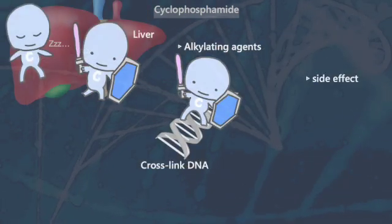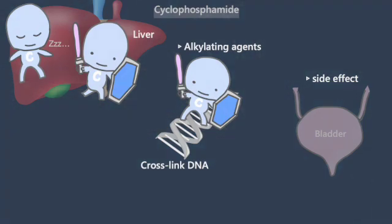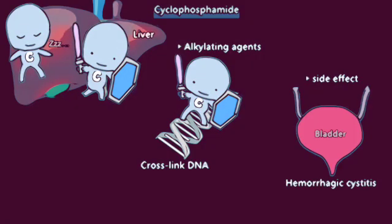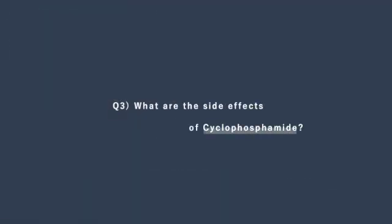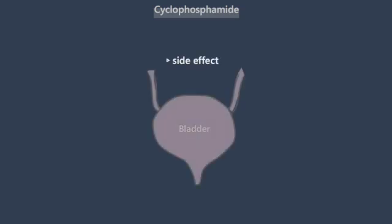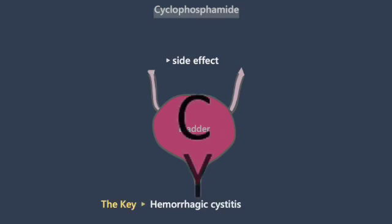The major side effect linked to cyclophosphamide is hemorrhagic cystitis. This is a critical point that is often tested in various exams.